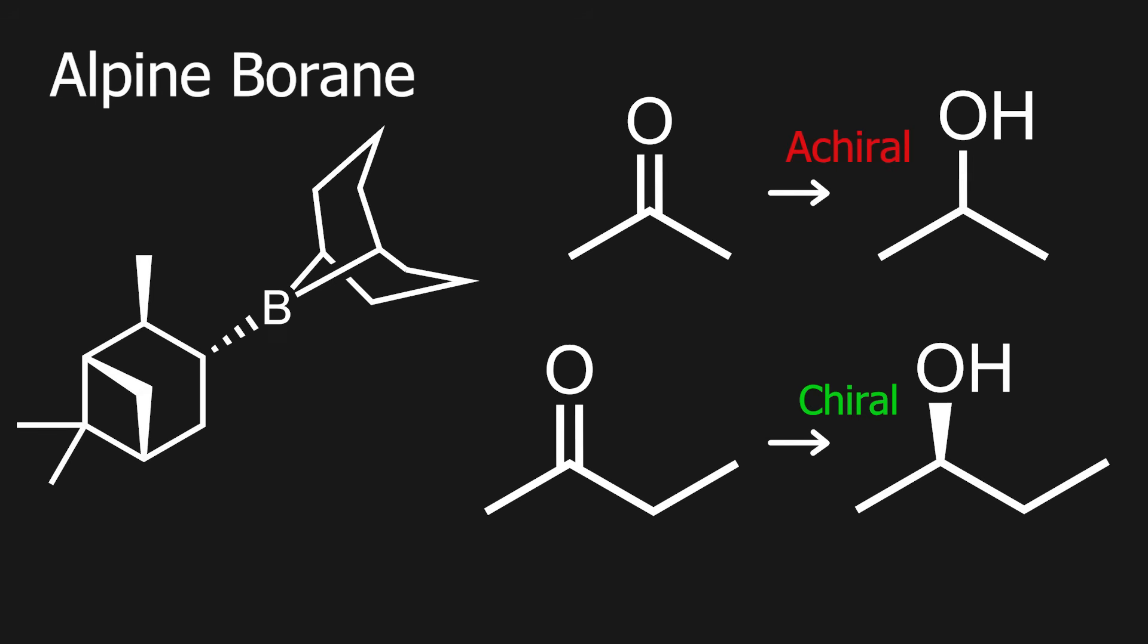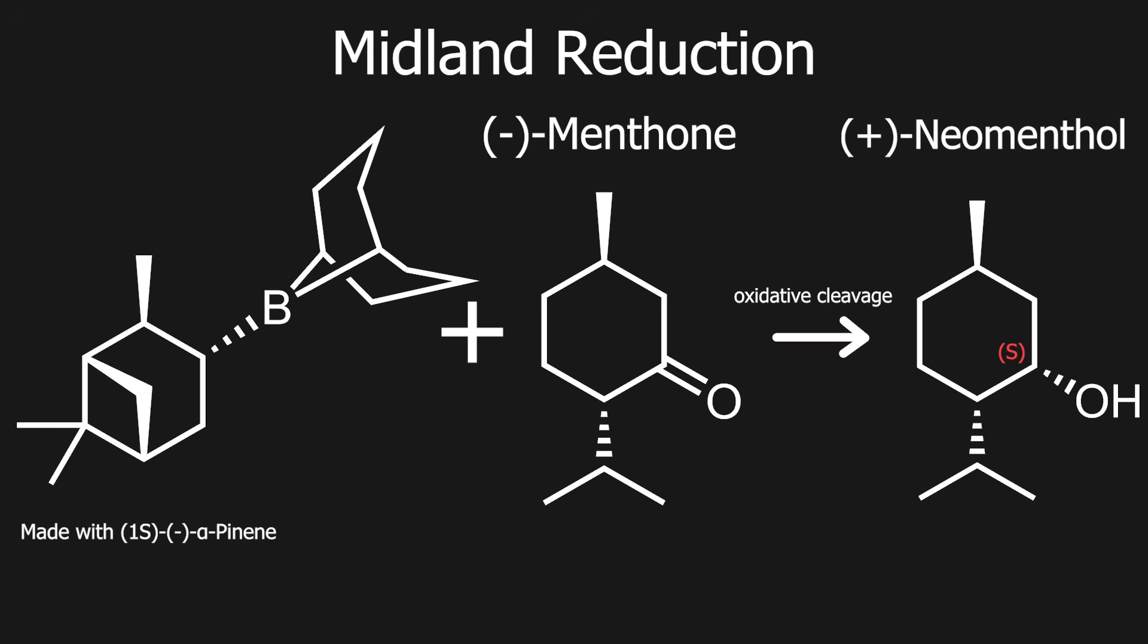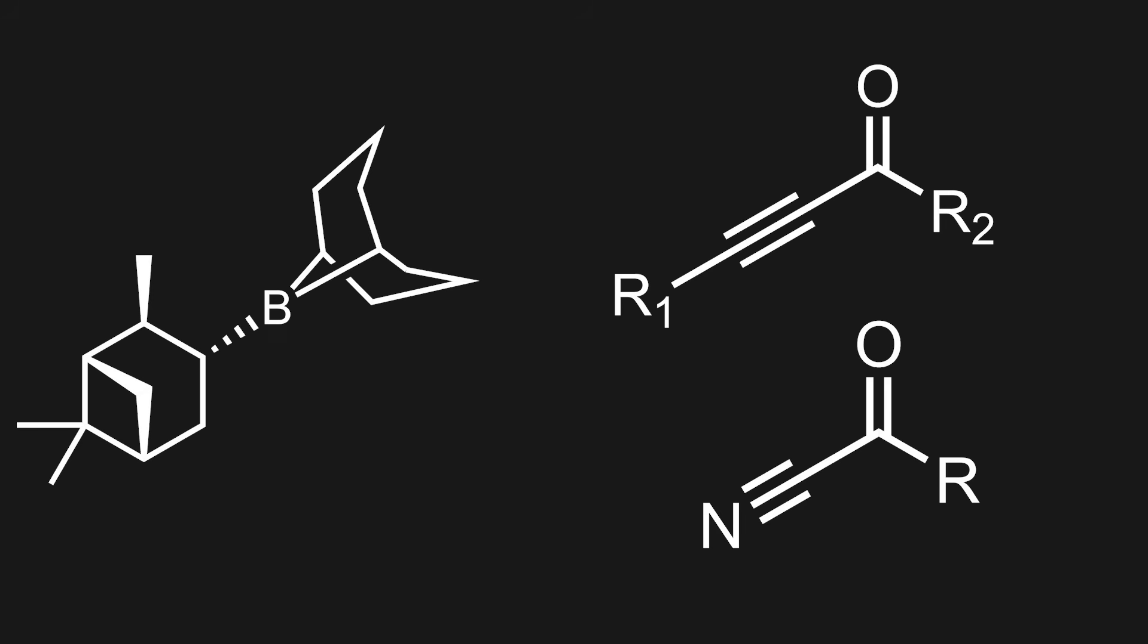For example, if we react alpine borane that is made with 1S levopinene with levomenthone, it will favor the S configuration for the chiral center and produce dextroneomenthol. This type of reaction is called a Midland reduction, and is usually done with ketones that have a low steric group next to them, like an alkyne or a nitrile.